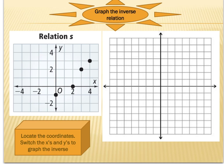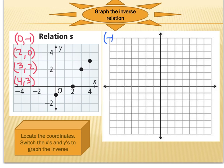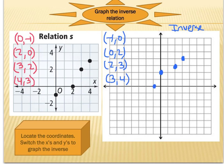When given a relation or function in graphical form and asked to find the inverse, the process is very similar. First we just write down the coordinates: (0, −1), (2, 0), (3, 2), and (4, 3). When finding the inverse, I simply switch the x and y values, so the points of my inverse are (−1, 0), (0, 2), (2, 3), and (3, 4). Graphing these points gives us the inverse of relation s.